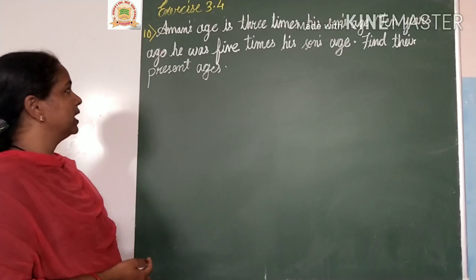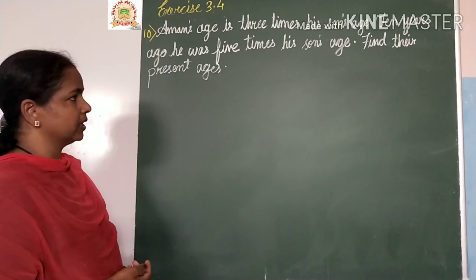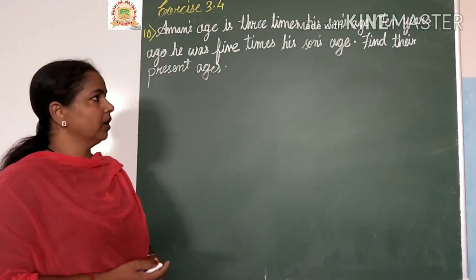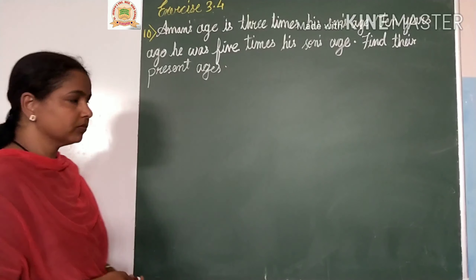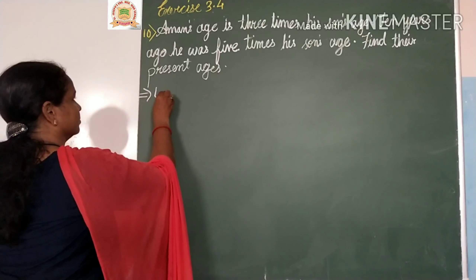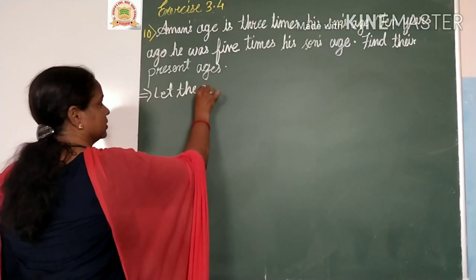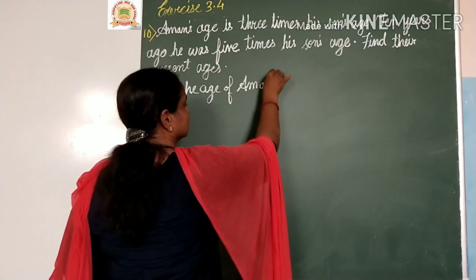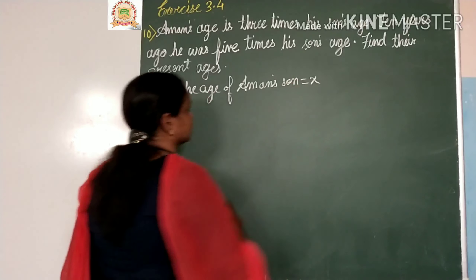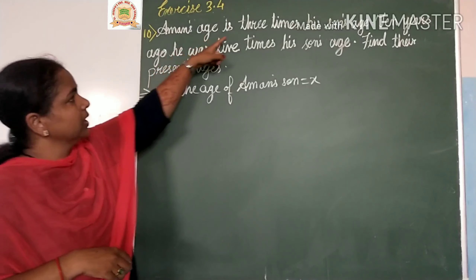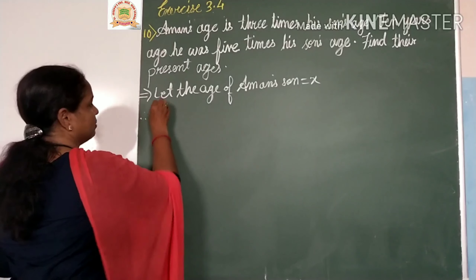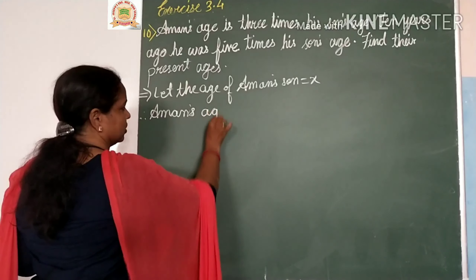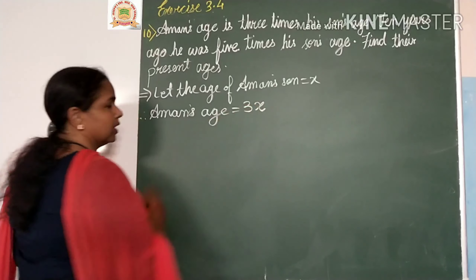Problem 10: Aman's age is 3 times his son's age. 10 years ago he was 5 times his son's age. Find their present ages. Let the age of Aman's son be equal to x. Aman's age is 3 times, therefore Aman's age equals 3x.